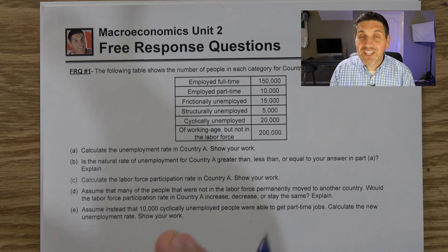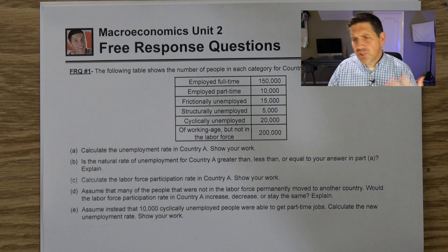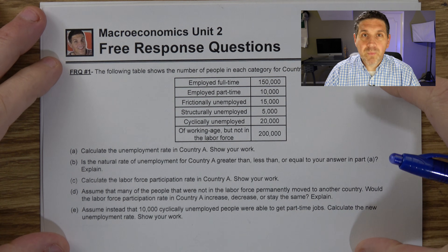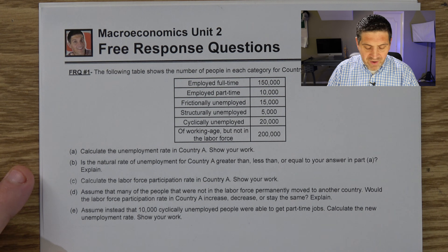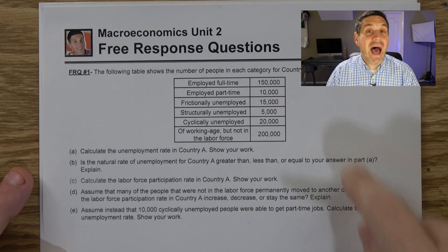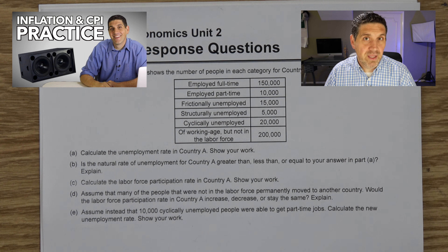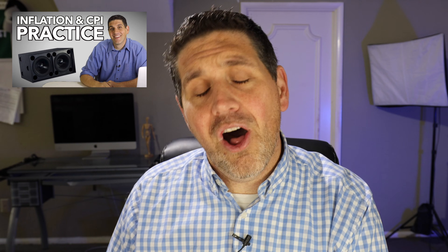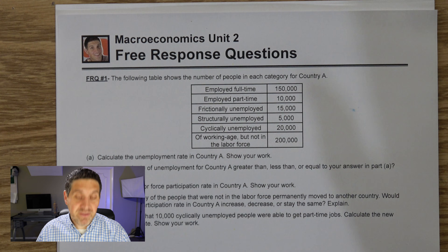Macroeconomics Unit 2 is actually one of the easier units and it feels a lot like a social science. There's a lot of vocabulary, a lot of general concepts, and it's pretty easy except for the calculations. In Free Response Number 1, we're going to talk about calculating unemployment. In Free Response Number 2, we're going to focus on GDP, GDP deflator, and how to calculate that. The one thing not covered here is CPI, but I have a video explaining consumer price index and those calculations.